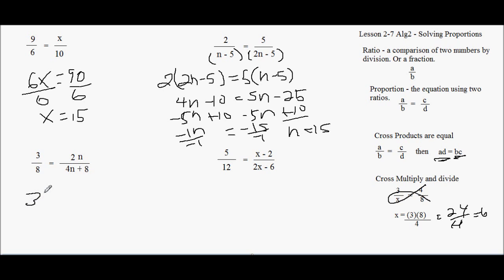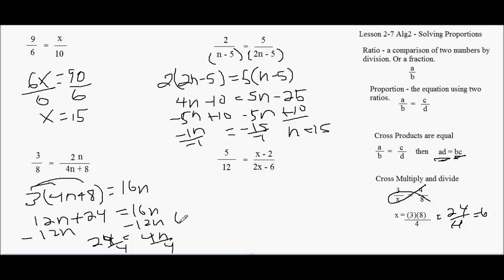Three times four n plus eight equals 16 n. I have to distribute again. 12 n plus 24 equals 16 n. Minus 12 n, get 24 equals 4 n. 16 minus 12 is 4. Then I divide both sides by 4, and I get 6 equals n.